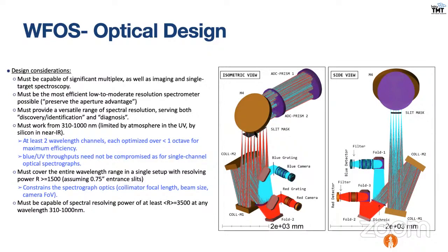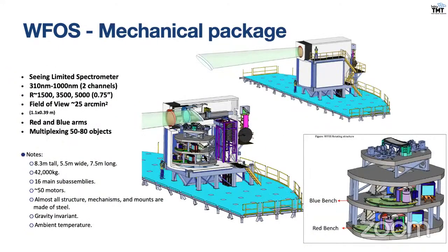The slit mask exchanger has masks where slits of various sizes can be carved out, and simultaneously about 50 to 100 objects can be observed. Light from the slit mask exchanger is collimated using a set of two collimator mirrors M1 and M2, one aspheric and one freeform. After collimation it is split into blue and red channels based on a dichroic at 5500 Angstroms. The blue channel disperses through a transmissive grating captured on the blue CCD, and the red light is similarly dispersed using a transmissive grating.